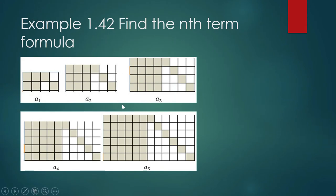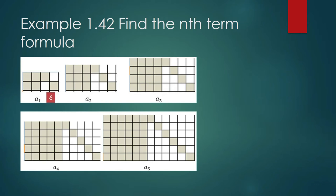Let us count the number of tiles in the first term. Going back to your sequence, the elements that appear in the sequence we call the terms — the first term, the second term, the third term, and so on. For the first term, how many color tiles do we have? It's six.